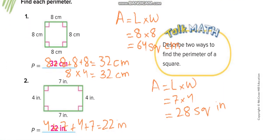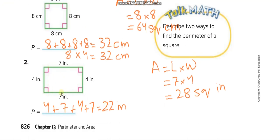For the perimeter of a square, add all the sides, or multiply by four — because each side is 8 centimeters and there are four sides: 8 times 4 equals 32. For area: length times width, or side times side for a square — 8 times 8 is 64 square centimeters. For another rectangle example with sides 7 and 4: perimeter is 7 plus 4 plus 7 plus 4, and area is 7 times 4 equals 28 square inches.